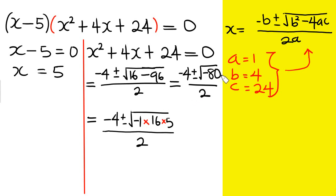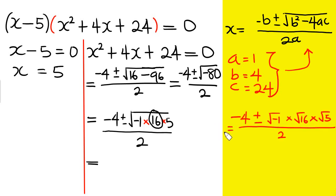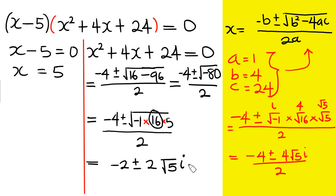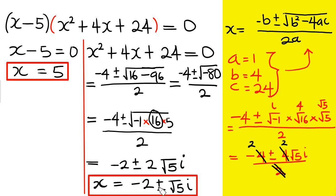To simplify √(-80), write it as √(-1 × 16 × 5) = 4i√5. So x = (-4 ± 4i√5) / 2. Dividing through by 2 gives x = -2 ± 2i√5. These are the second and third values of x — the complex solutions.